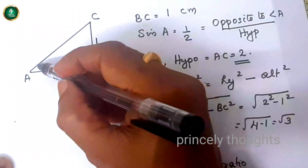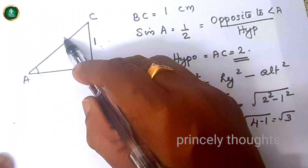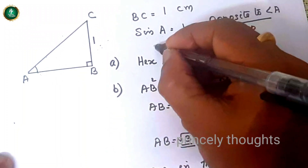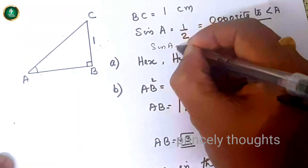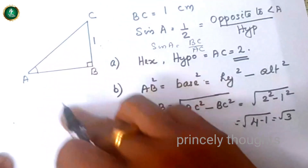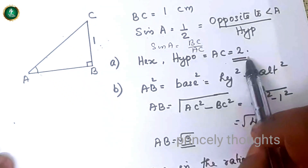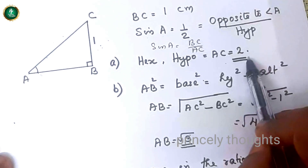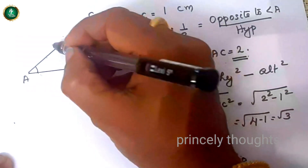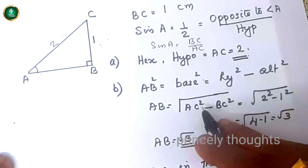What is BC? What is AC? Sin A equals BC by AC. AC is the hypotenuse. Sin A equals 1 by 2, which means BC by AC equals 1 by 2. So the hypotenuse AC is 2 cm. We have to use the length of AC as 2 cm.